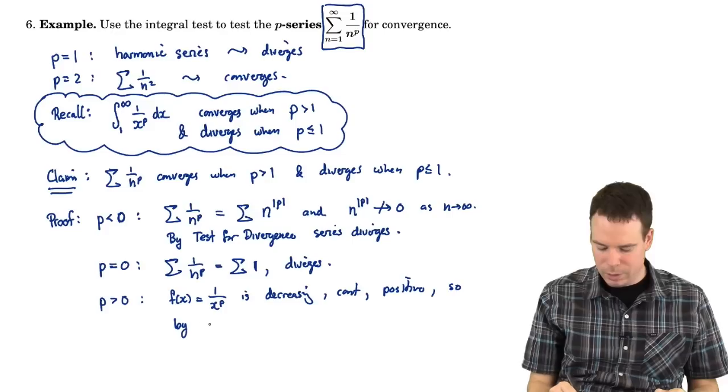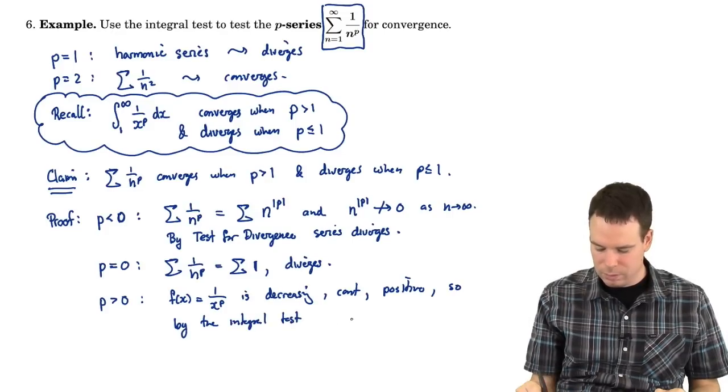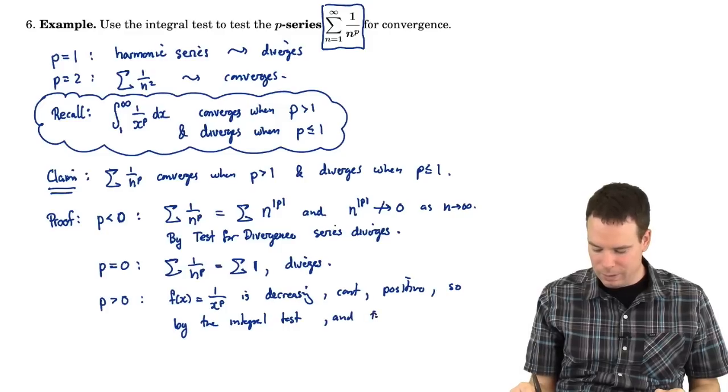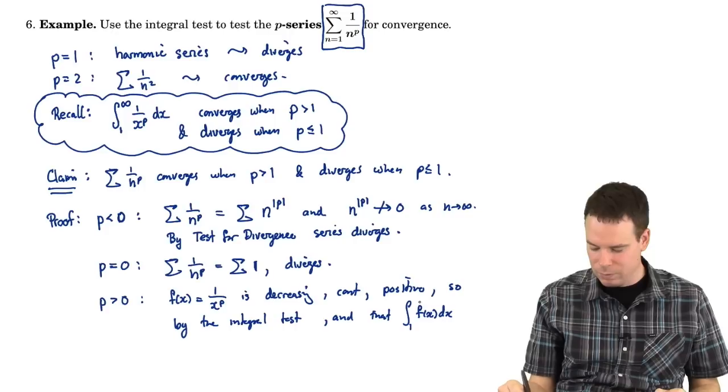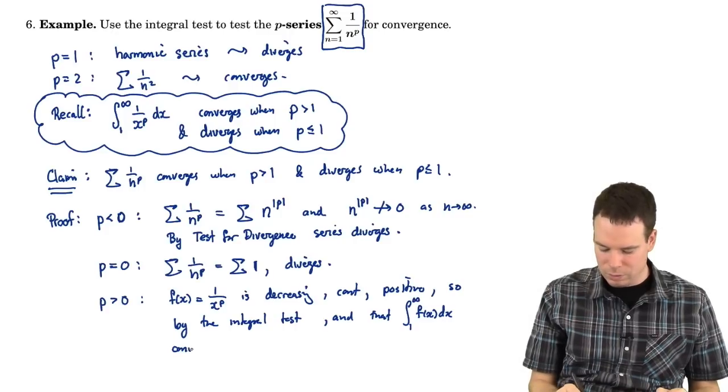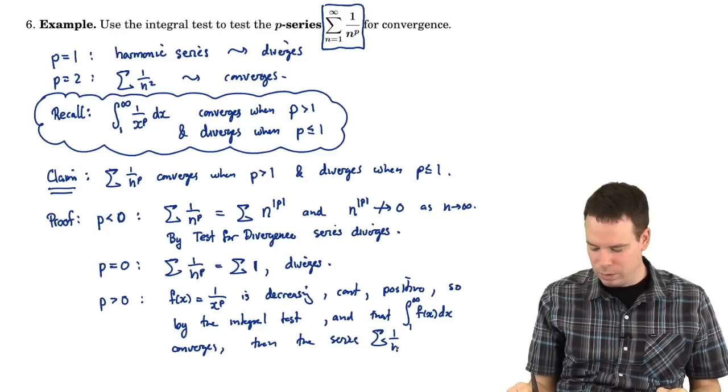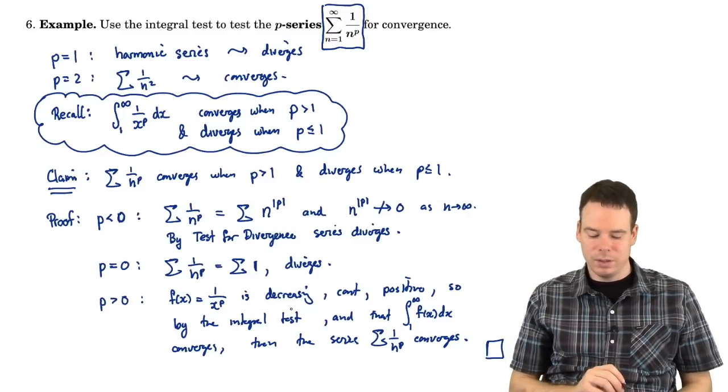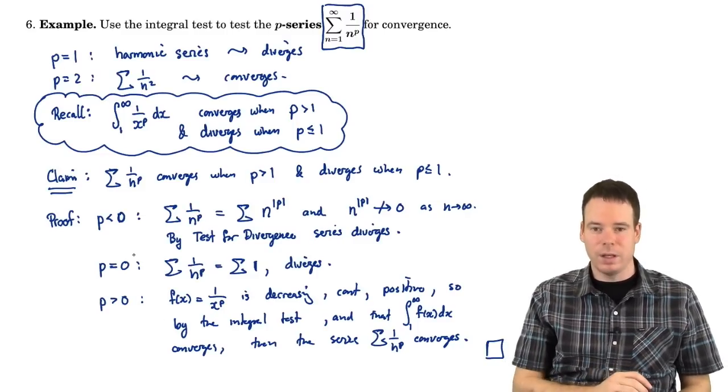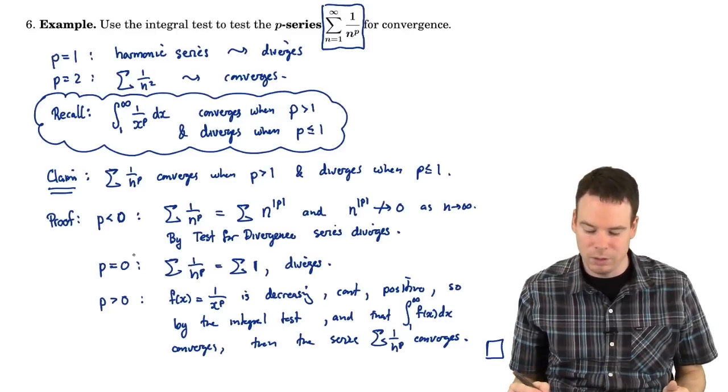So now we can say by the integral test and that the integral of f dx from 1 to infinity converges, then the series sum of 1 over n to the p converges. So that's the case we can use the integral test in, the case where the function was decreasing. We still had to split off these other two cases which didn't fall into the case where we could apply the integral test.